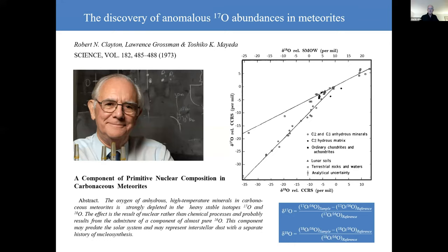The second thing I need to say is that certainly at the time this paper was published, it was believed that all chemical and physical processes fractionated the oxygen isotopes in such a way that the delta 17 value would be half or very close to half of the delta 18 O value. This is what's known as mass dependent fractionation. And we'll be referring to this later on in the talk.